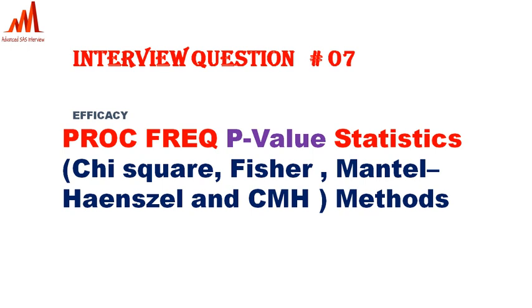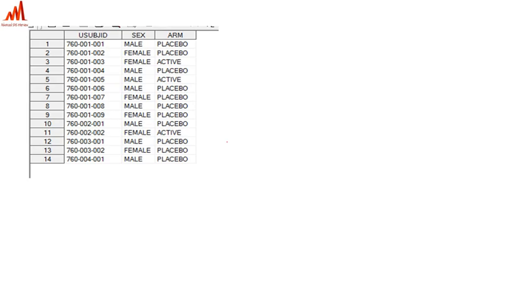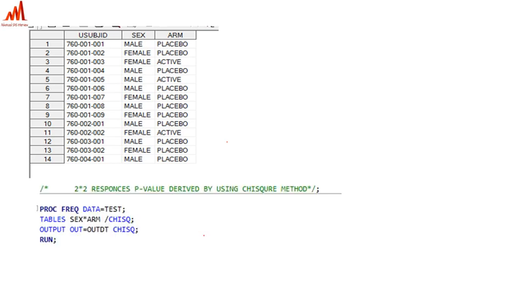We will cover methods like chi-square, Fisher exact, Mantel-Haenszel, and CMH. Here you can see the dataset — we have 14 subjects with two different categories in the sex variable and two different categories in the arm variable. In sex we have male and female, and in arm we have placebo and active — two types of categories. For this two-by-two response, we generally use the chi-square method.